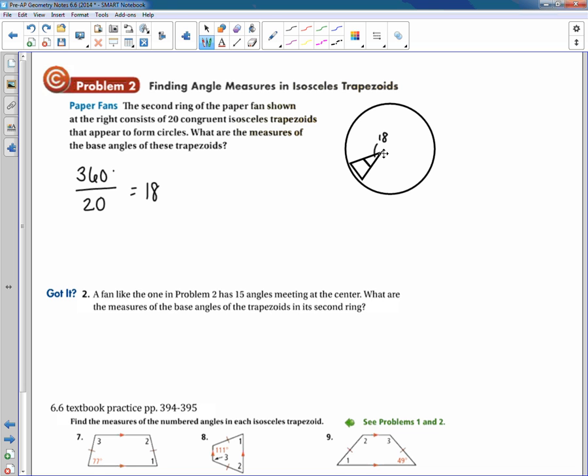Now, we're going to assume, because it's an isosceles trapezoid, that this is an isosceles triangle as well, right? So if that's true, how can I find the measure of these angles right here? Exactly. So I'll say 180 minus 18. What do I get when I subtract 18 from 180? 162. And then I'll divide that by 2 to get this single angle. And what did I get? 81. So this angle right here is going to be 81 degrees.